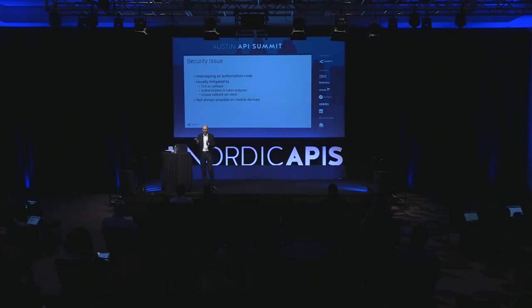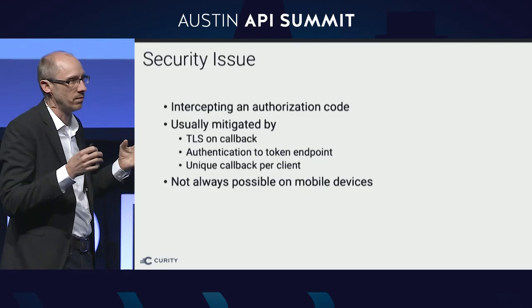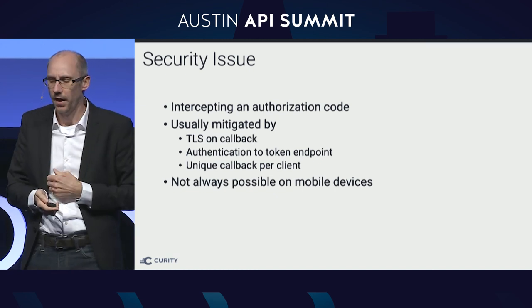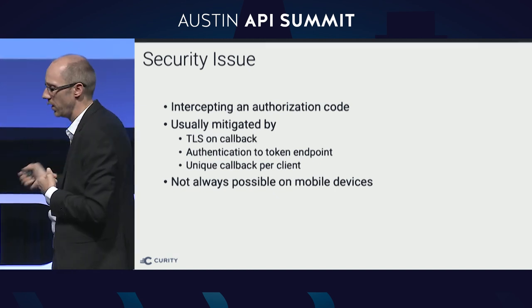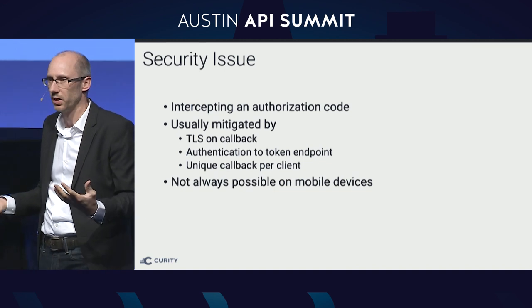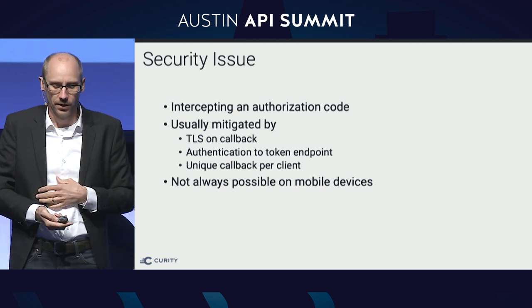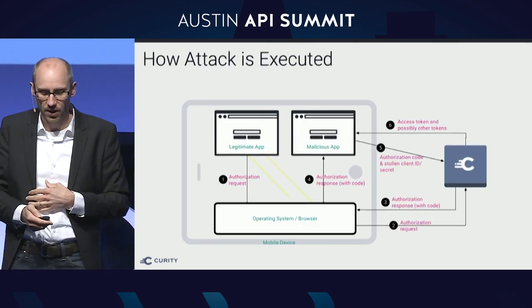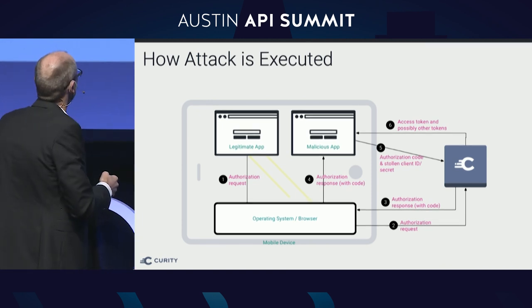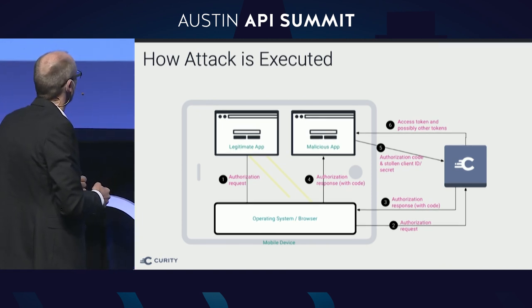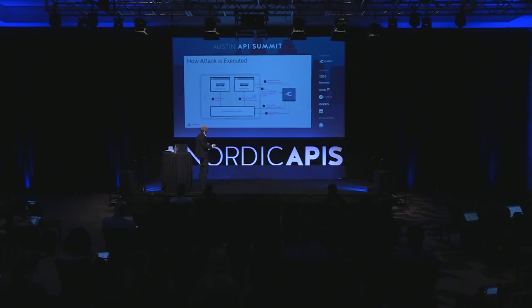All the strong authentication and fancy identity proofing that cost a lot of money is completely sidestepped — at the very last mile, the attacker becomes that user. This often comes up in mobile applications, because in web-based applications the redirect is over TLS and it's harder to intercept. Looking at the flow diagram: a legitimate application starts the authorization request, the authorization server returns the one-time usage authorization code, and then it gets grabbed right here in step four — sent to the malicious application rather than the legitimate one.